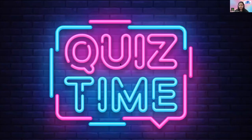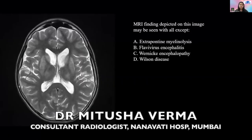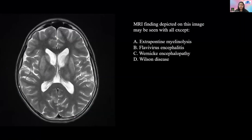There will be 15 neuro questions. Let's start with the first one. The MRI finding depicted on this image may be seen with all except — so the question is 'all except.' Most of you chose option A, but then noticed the 'all except' qualifier. The options include extra-pontine myelinolysis, flavivirus encephalitis, and Wernicke's encephalopathy.